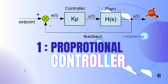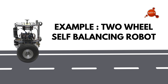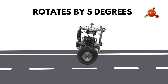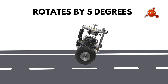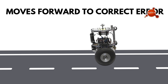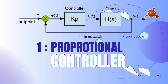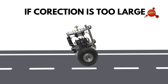If the error is large, the controller makes a big correction; if the error is small, the correction is smaller. For example, in a two-wheel self-balancing robot, if the robot tilts forward by 5 degrees, the P controller commands the wheels to move forward proportional to the angle to bring it back to an upright position. If the correction is too small, the robot won't stabilize fast enough; if too large, it may overshoot and tilt backwards. The I and D controllers compensate for these limitations.